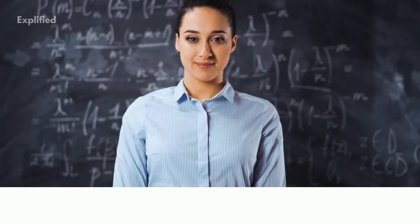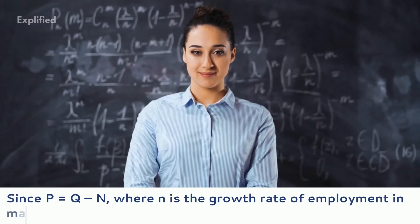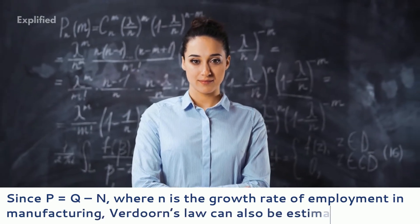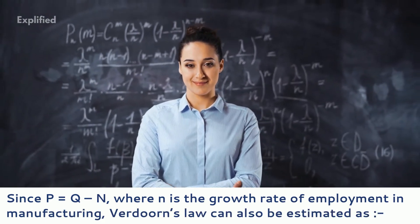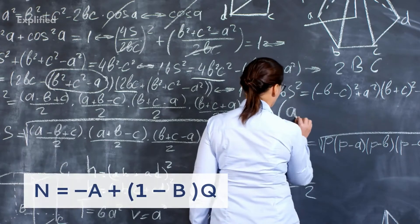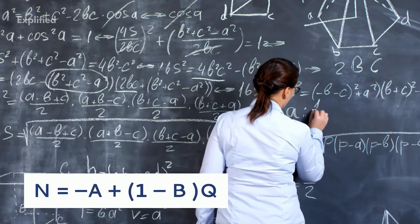Since P equals Q minus N, where N is the growth rate of employment in manufacturing, Verdoorn's law can also be estimated as N equals minus A plus 1 minus B into Q.